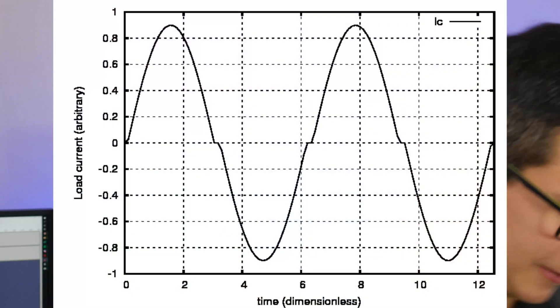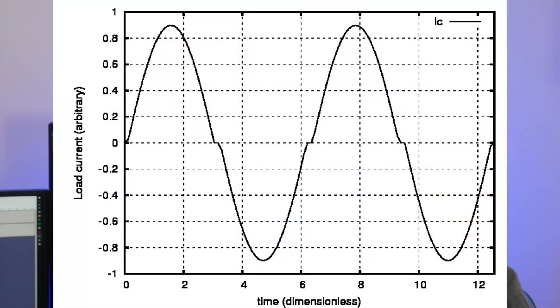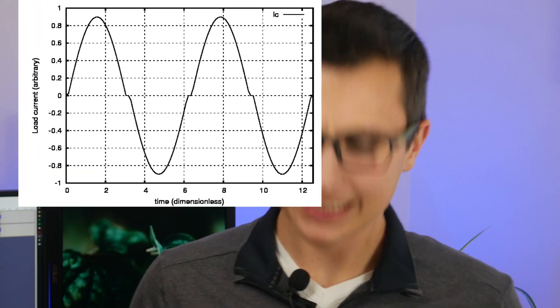Crossover distortion takes a pure sine wave and turns it into something that looks more like this. That isn't great — it isn't even good. If we're only looking near the peaks, a Class B amplifier output looks pretty sinusoidal. Collector current is zero, and efficiency is significantly improved at the cost of this crossover distortion.